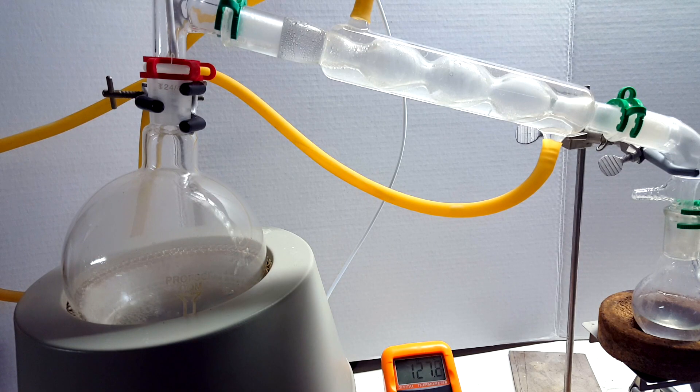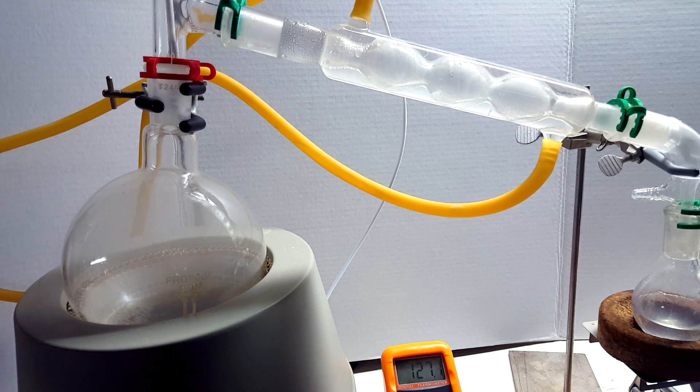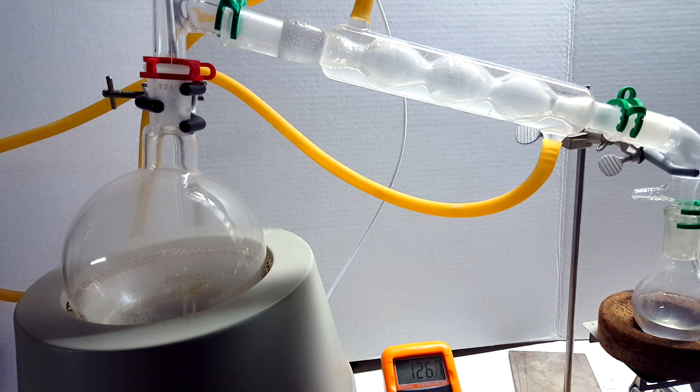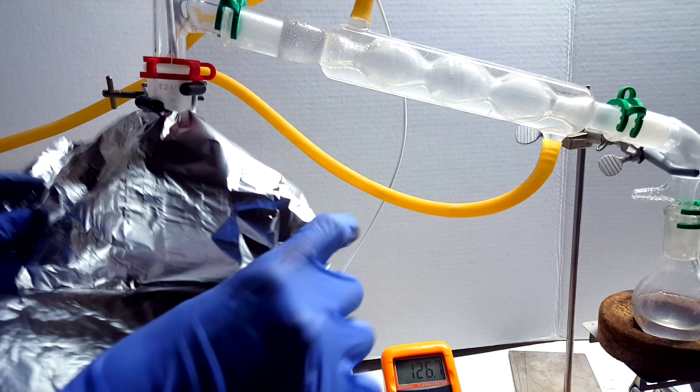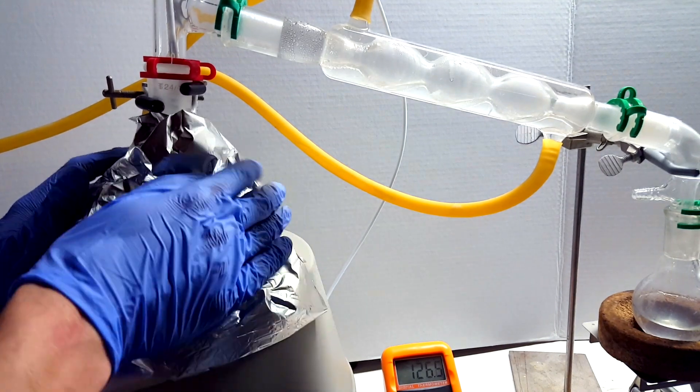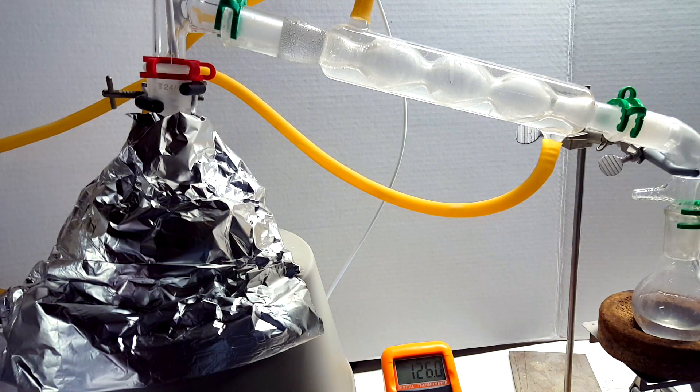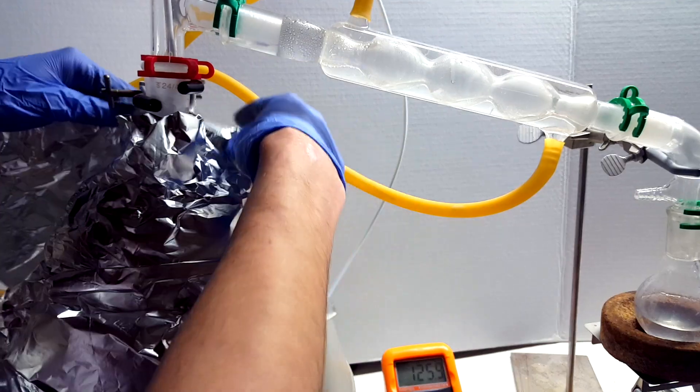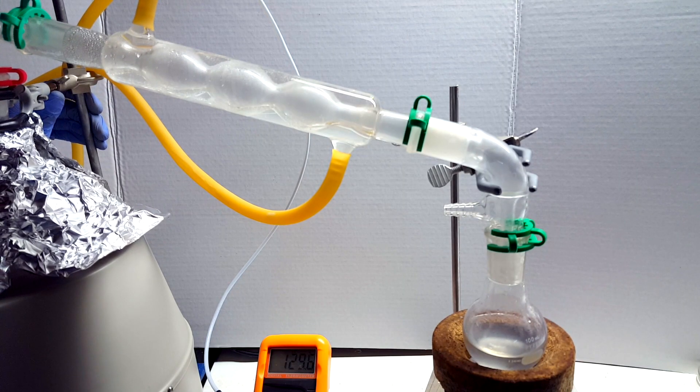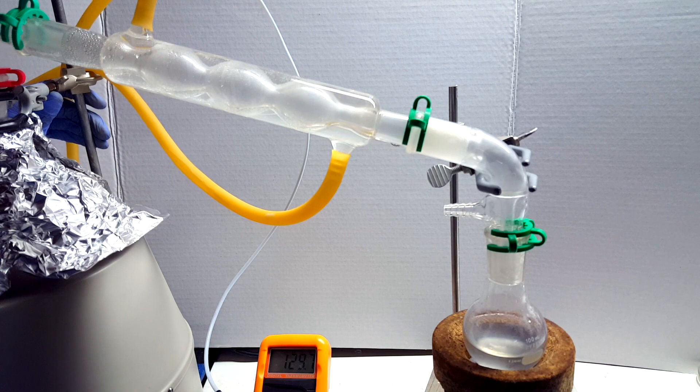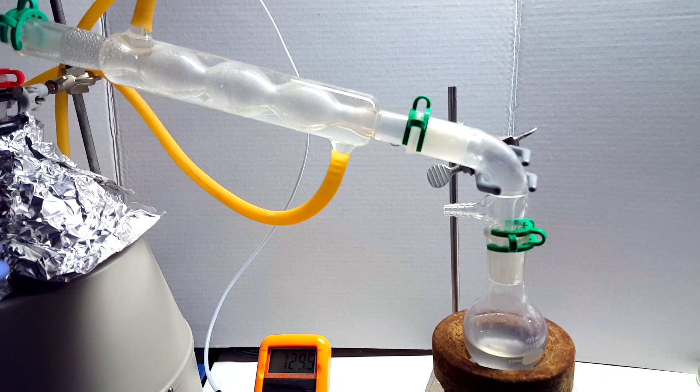The temperature then stagnated at about 127°C. This was in part due to the large volume of flask used, with only a small volume of liquid left. To insulate it some to hopefully reach the increased temperature, I wrapped the distilling flask and temperature adapter in aluminum foil. After wrapping, the temperature began to rise again slowly, and some more liquid was coming over into the condenser.